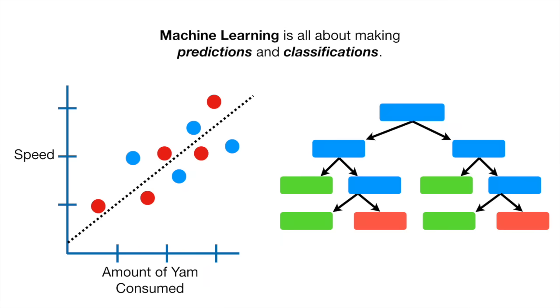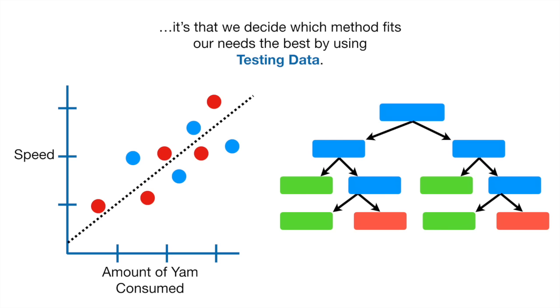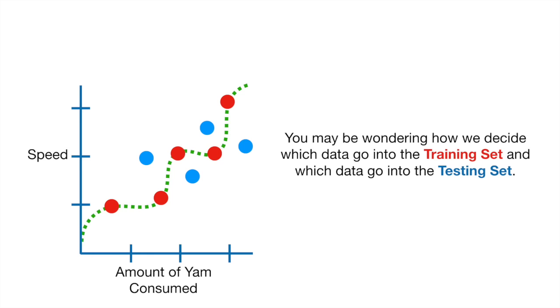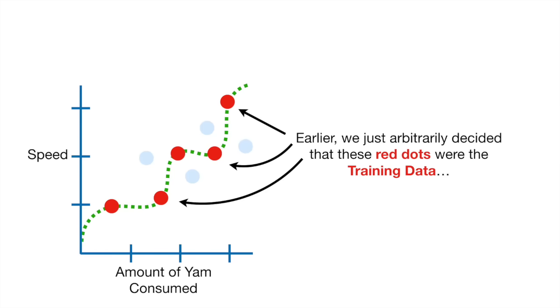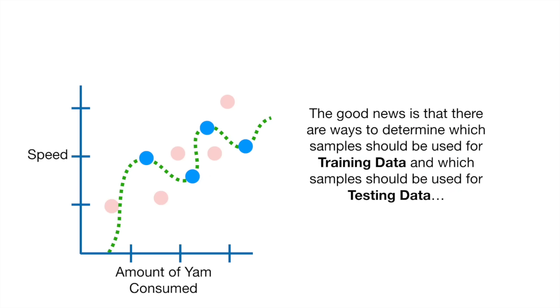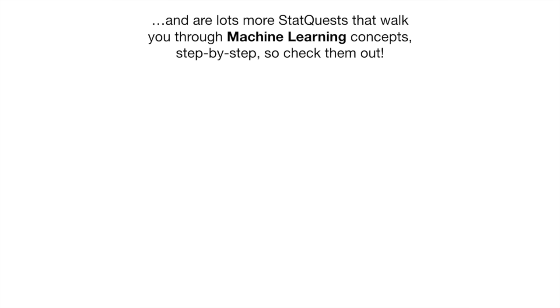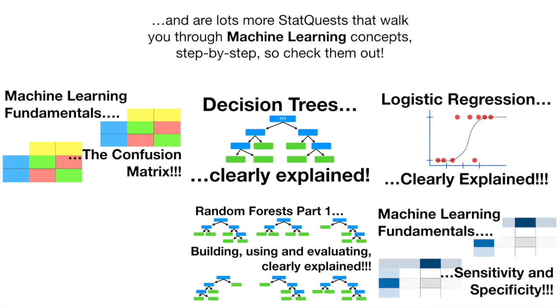In summary, machine learning is all about making predictions and classifications. There are tons of fancy machine learning methods, but the most important thing isn't what makes them fancy — it's that we decide which method fits our needs best by using testing data. You may be wondering how we decide which data go into the training set and which go into the testing set. The good news is there are ways to determine this, and if you're interested, check out the StatQuest. There are lots more StatQuests that walk you through machine learning concepts step-by-step.